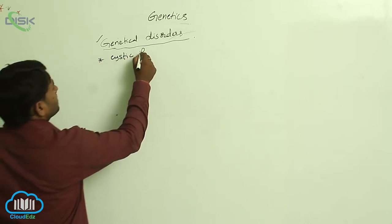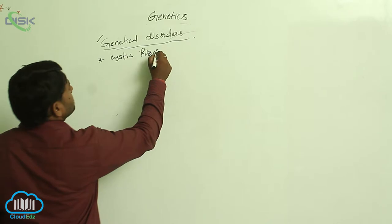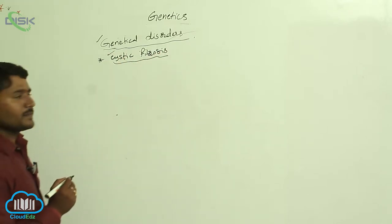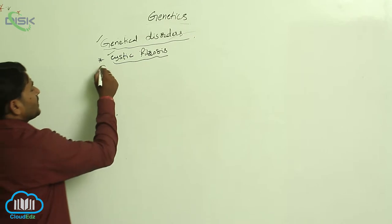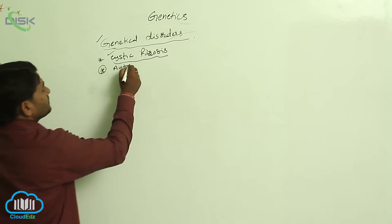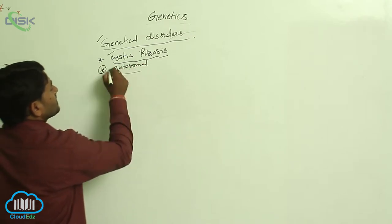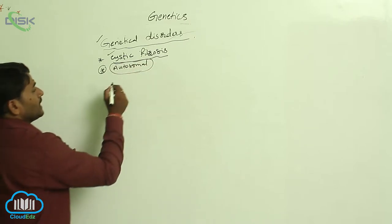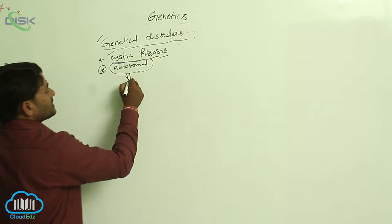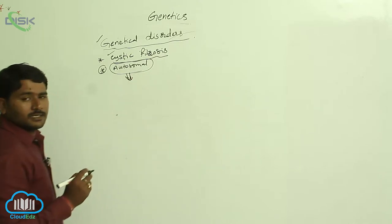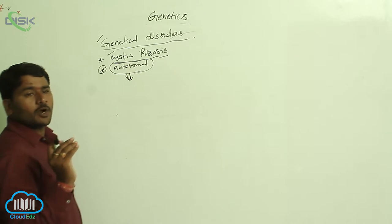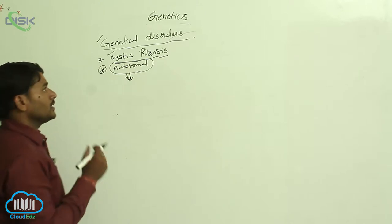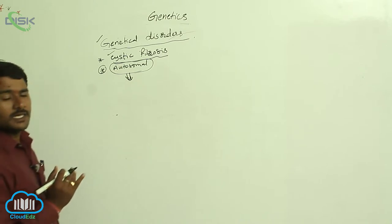Another genetic disorder is cystic fibrosis. Cystic fibrosis is an autosomal recessive disorder in which the damaged gene causes resorption of salts in the mucous membrane of the individual.